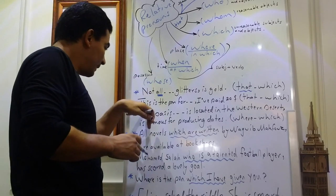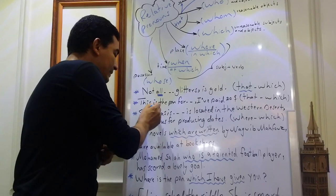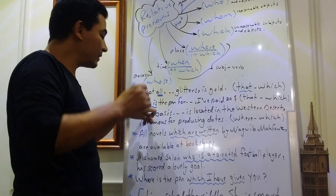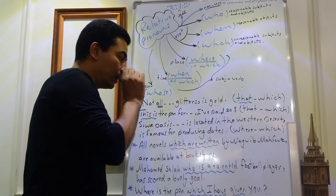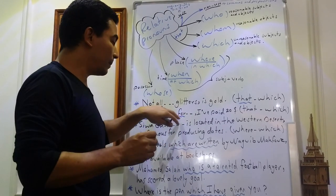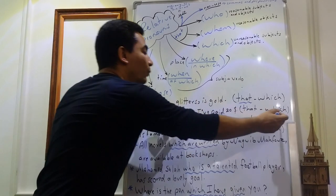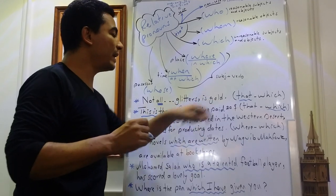The second, this is the pen for I paid twenty dollars. Of course, we have this is. If we have seen this is, so our thinking will go to that. But if we look closer to the sentence, we have the preposition for. Because of the preposition for, we don't use that. We use which. So, this is the pen for which I have paid twenty dollars.